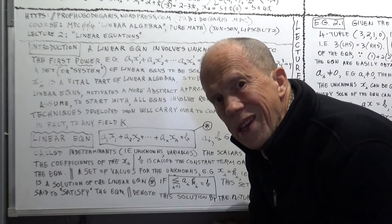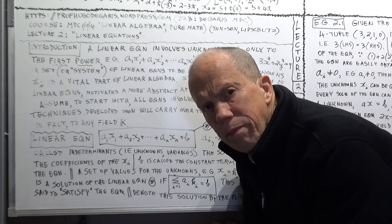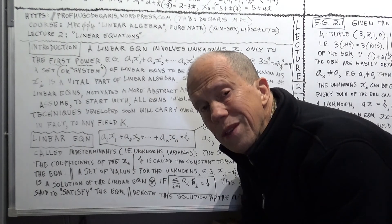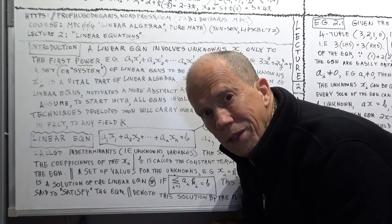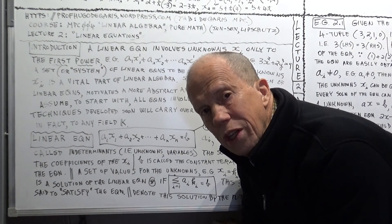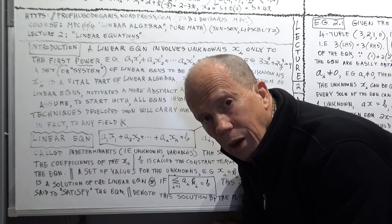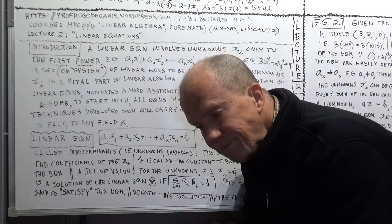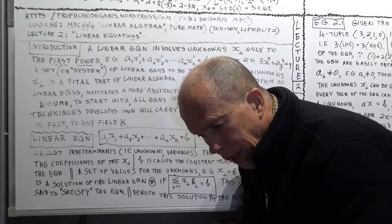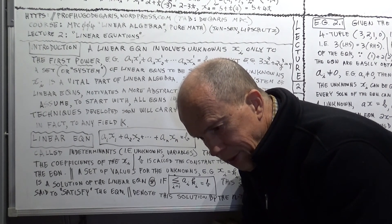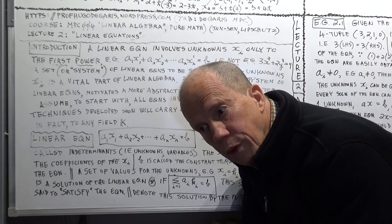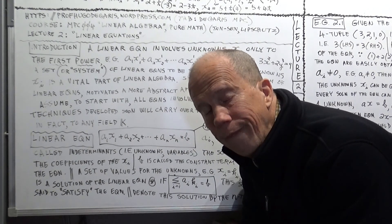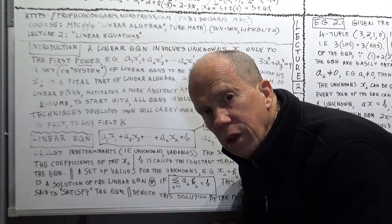This is Dagaros MPC — Math, Physics, Computing — with 130-plus Masters level and PhD level courses on pure mathematics and mathematical physics. This is course number 4, MPC 4, on linear algebra.